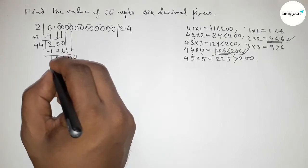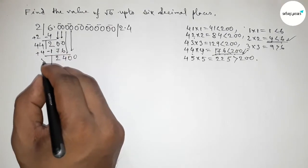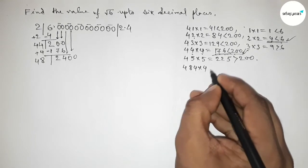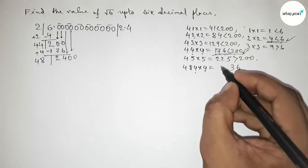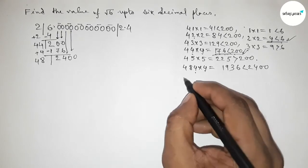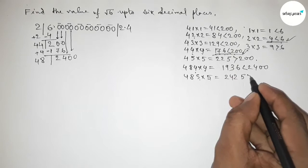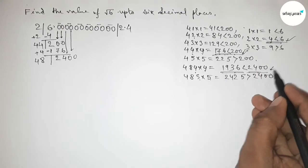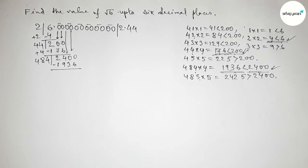Write down the next pair of zeros and draw a division line. The last digit of the current number is 4, so we add 4: 4+4=8. Take a number beside 8 and multiply by it. Checking values — taking 4: 84×4=336, less than 2400. Taking 5: 85×5=425, greater than 2400. So 1936 is less than 2400 — we take 4. Subtracting gives the next remainder.